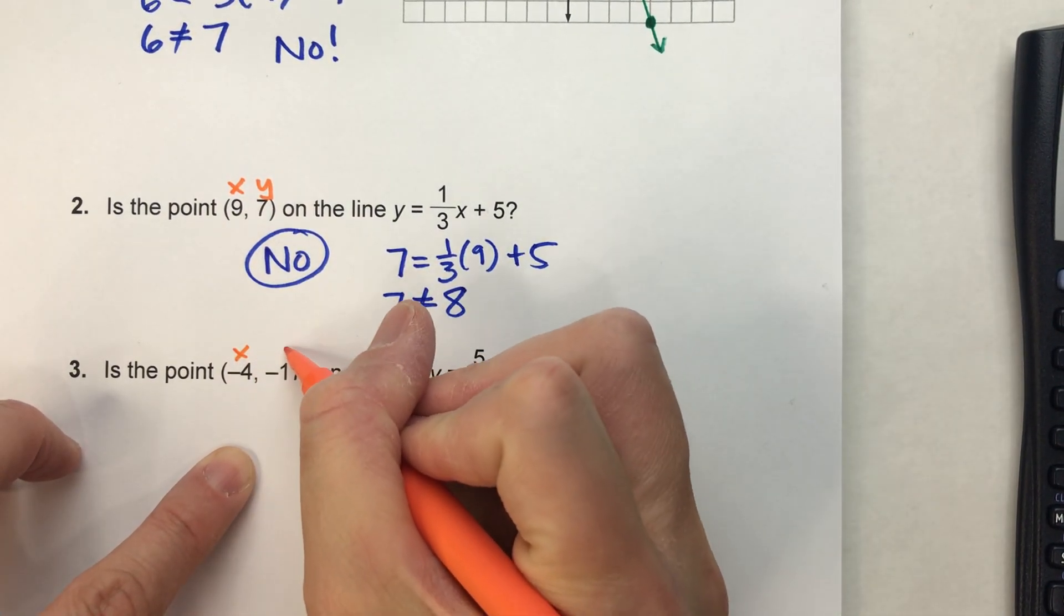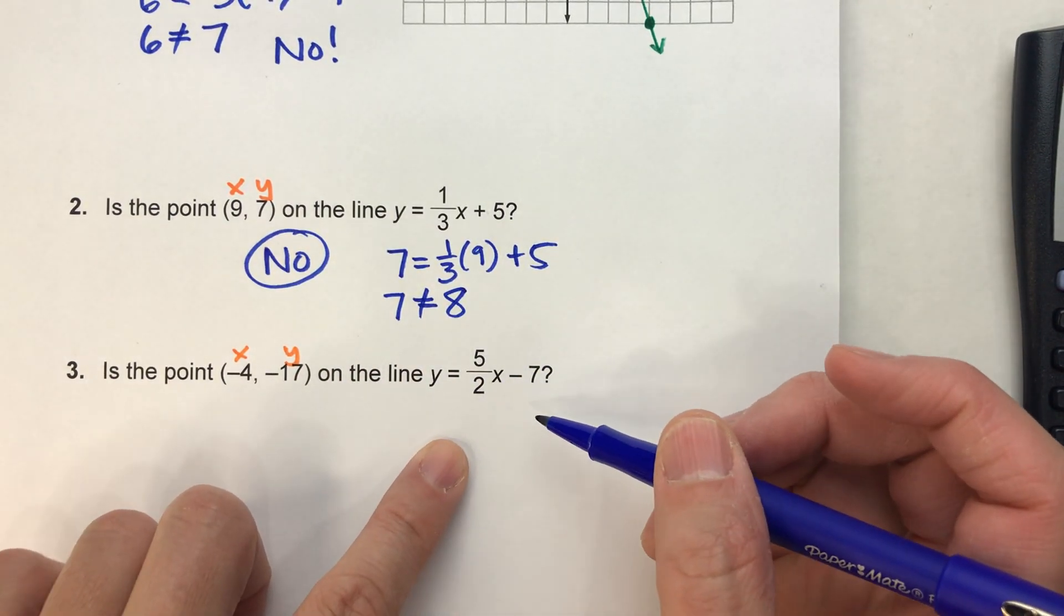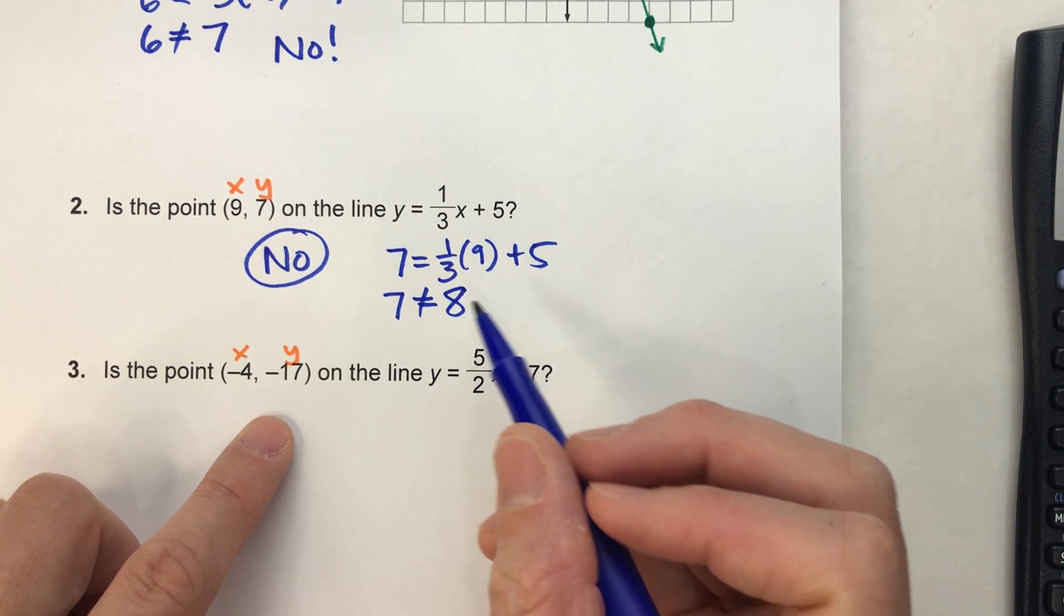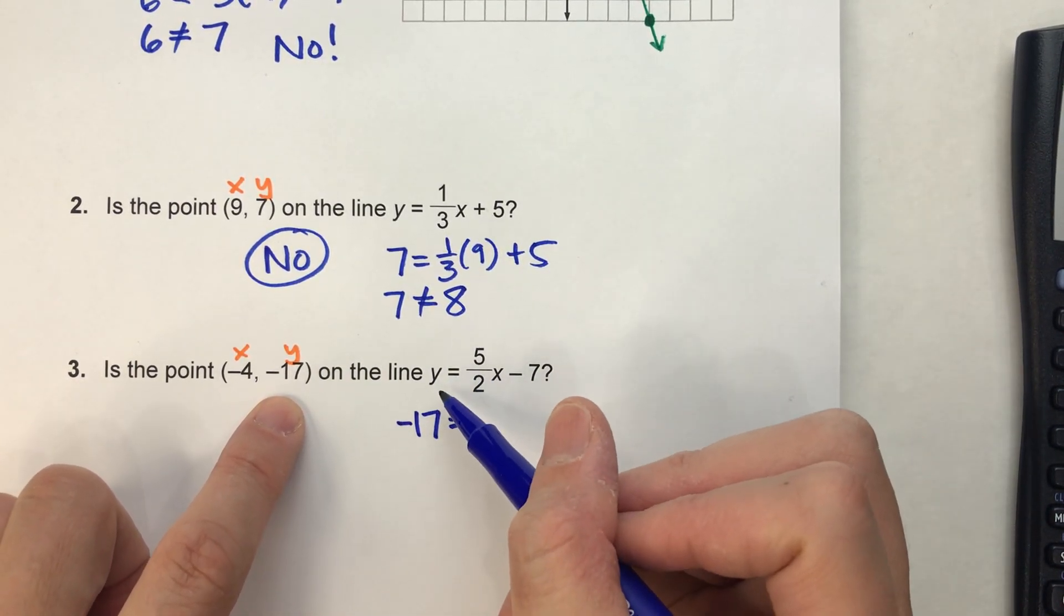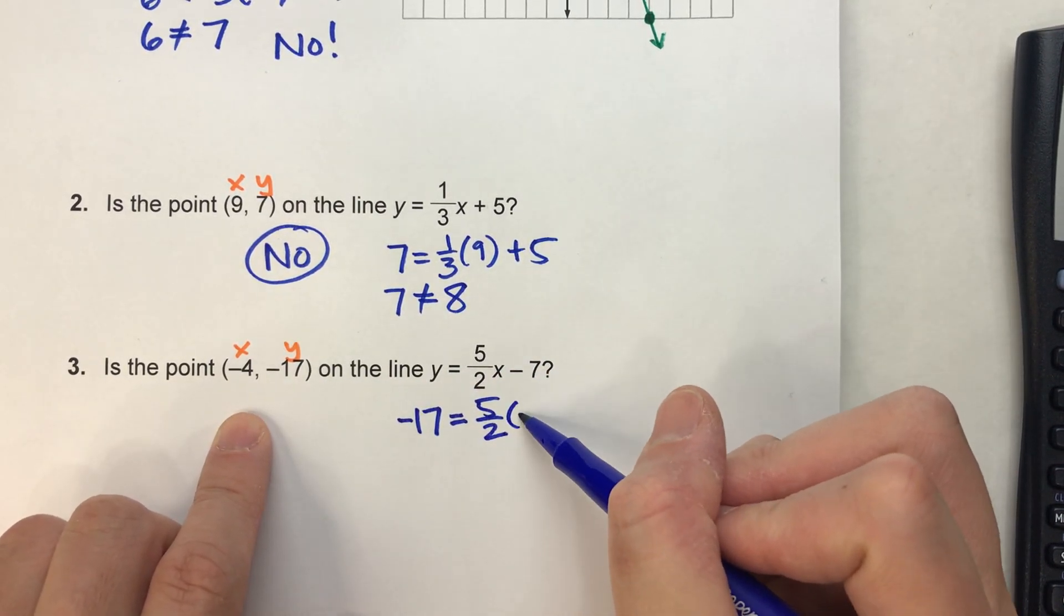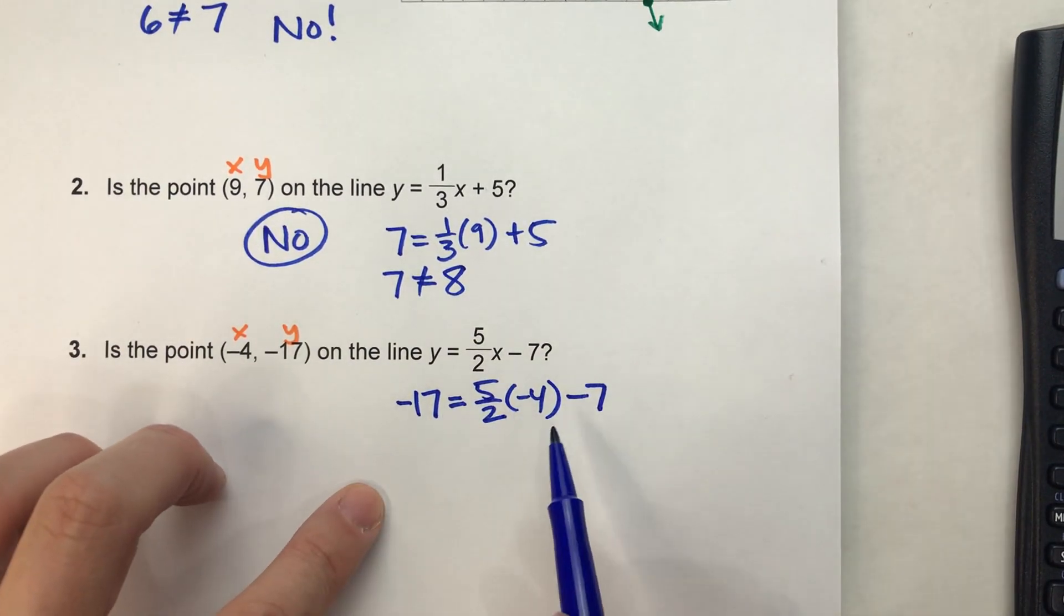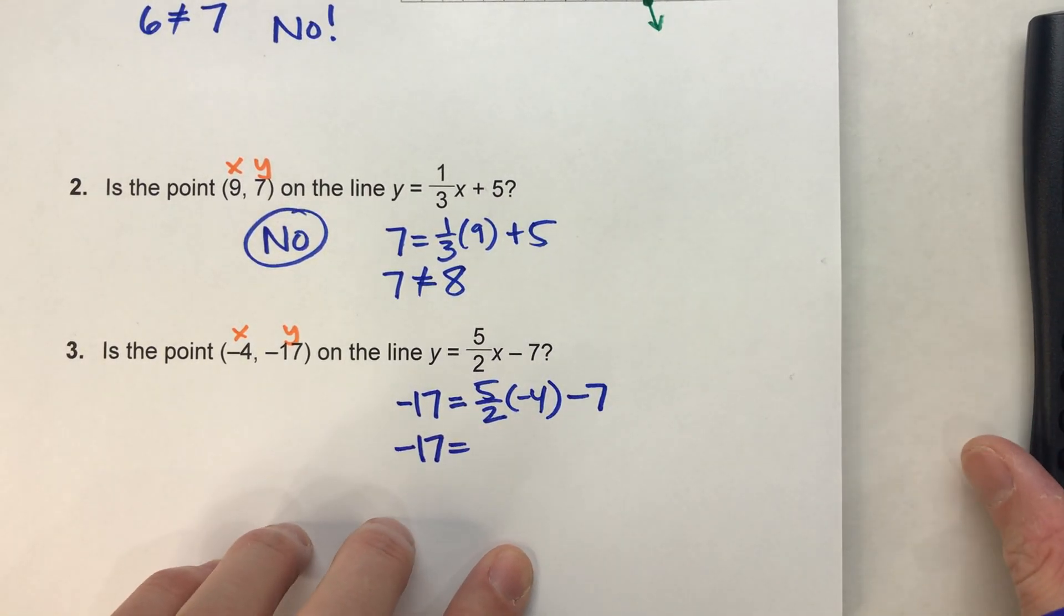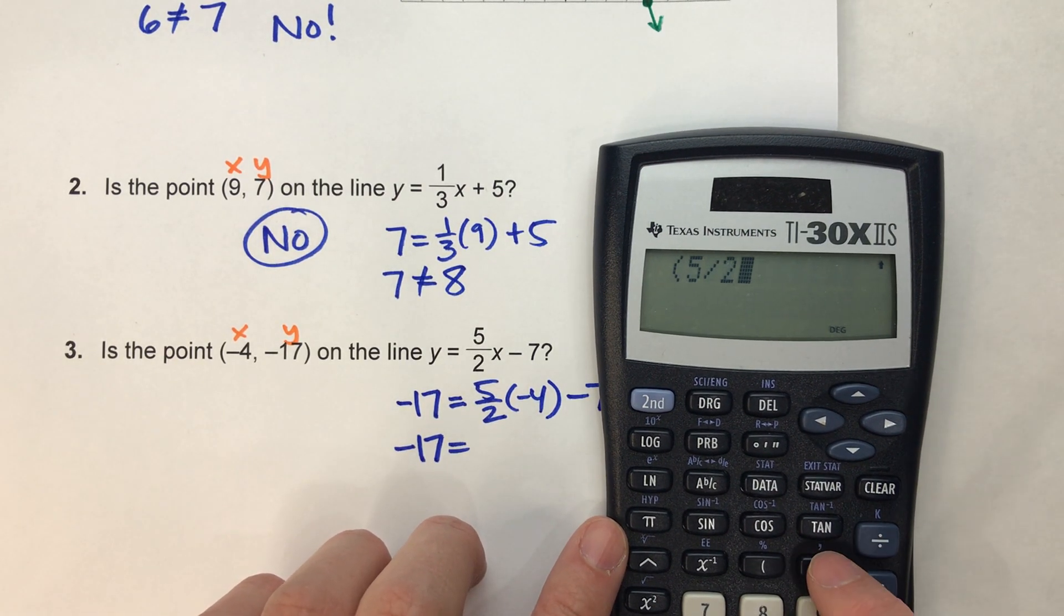Alright. Last one. This one's a little complicated. We've got some negatives in our coordinate: (-4, -17). We also have a fraction in our equation. y = (5/2)x - 7. Let's put it in and find out. y is -17. So, -17 equals (5/2) times x. In this case, x is -4 minus 7. I guess we'll find out. So, if -17 really does equal all this stuff, we know that coordinate is on the line. So, let's put it in a calculator and find out. (5/2) times -4 minus 7.